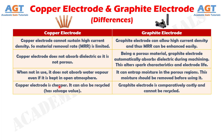Difference number 9: copper electrode is cheaper, can also be recycled, and has salvage value. Whereas, graphite electrode is comparatively costly and cannot be recycled.